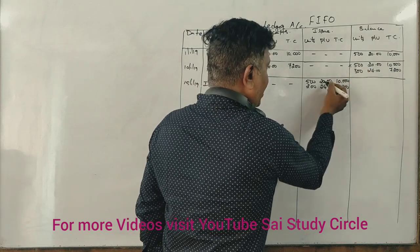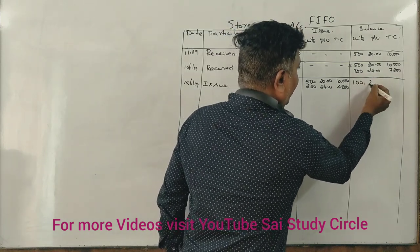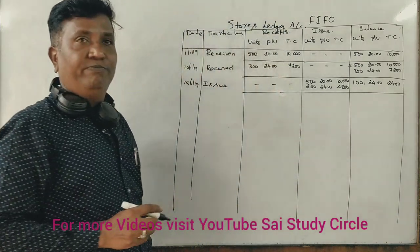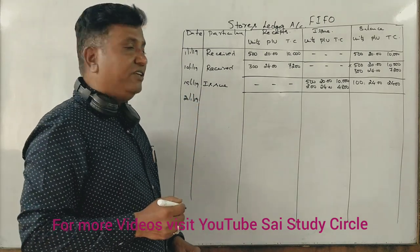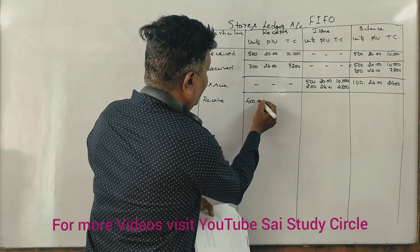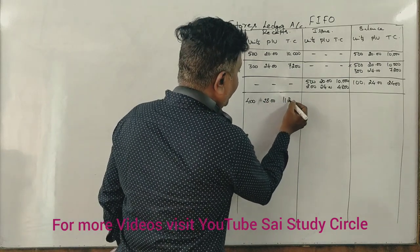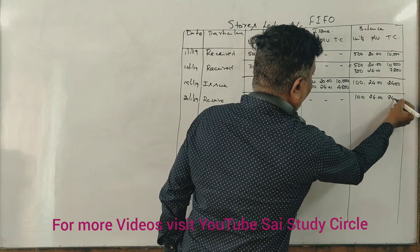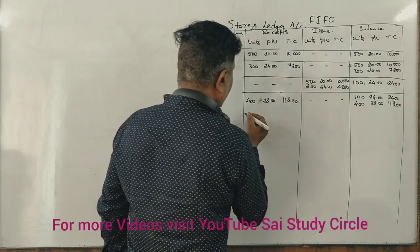On January 20th, we received 400 units at ₹28 per unit, totalling ₹11,200. After this receipt, our stock balance is: 100 units at ₹24 = ₹2,400, plus 400 units at ₹28 = ₹11,200. On January 25th, we issue again using FIFO — starting with the 100 units at ₹24 (₹2,400), then 200 units at ₹28, giving ₹5,600.